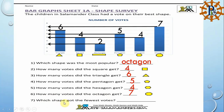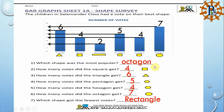The last question: which shape got the fewest votes? Here we are asked for a name, not a number. The fewest votes means the smallest number. The smallest bar is rectangle with 2 votes. So we write the name: rectangle. This is the bar graph section, and I think all examples work the same way. We covered bar graphs in first term as well.